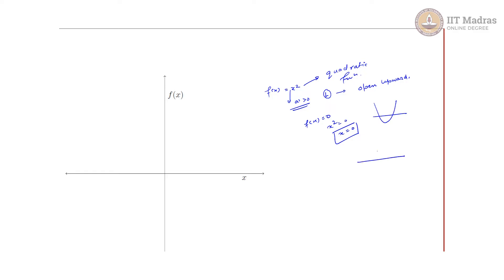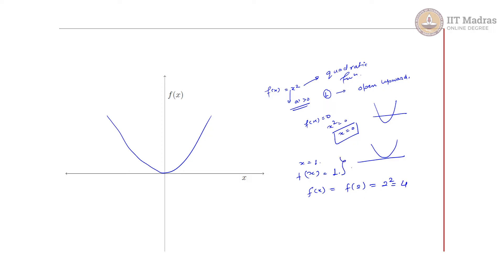The curve stays at the origin and opens upward. Key points: at x = 1, f(x) = 1, giving the point (1, 1); at x = 2, f(x) = 4, giving the point (2, 4). So the parabola passes through (1, 1) and (2, 4).